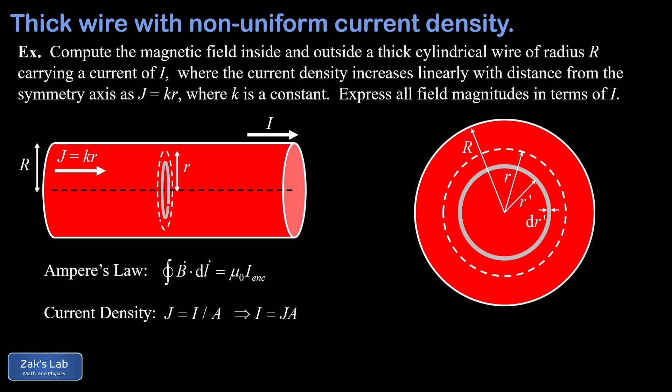The whole point is to compute the total current enclosed within the Ampere loop. We get the infinitesimal current contribution dI enclosed equal to j times dA, where dA is the area of the thin ring. It is now legal to multiply current density by area because j has a single well-defined value of k times r prime inside the infinitesimally thin ring. The incremental area dA is just the circumference of that ring multiplied by its thickness: 2π times r prime times dr prime.